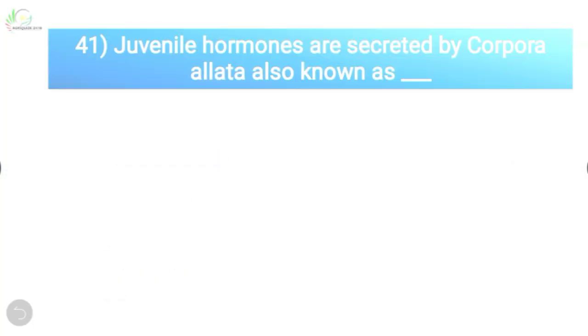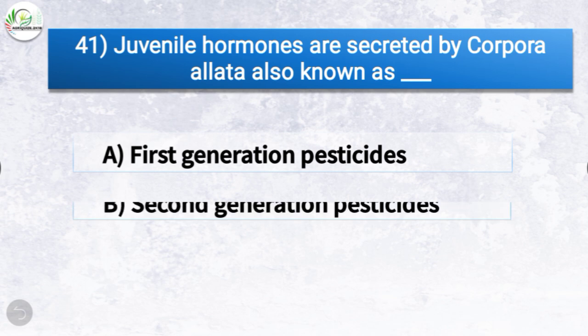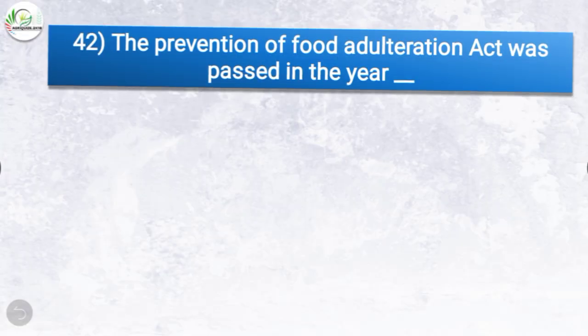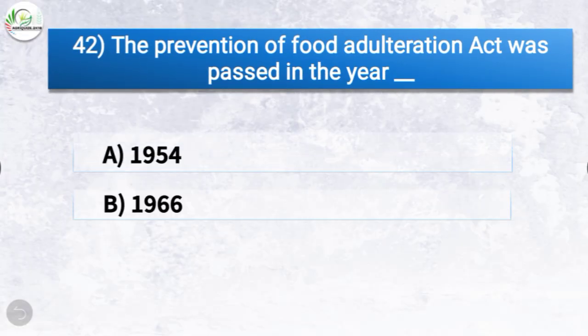Question number forty-one: juvenile hormones are secreted by corpora allata, also known as what generation of pesticides? The options are first generation, second generation, third generation, or fourth generation pesticides. The correct answer is option C, third generation pesticide. So juvenile hormones secreted by corpora allata are also known as third generation pesticides.